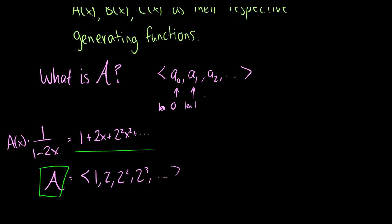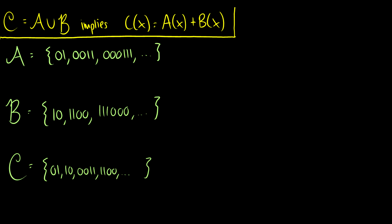So why do we need this notion? Combinatorial families are used to count more complex objects, and they have some very nice properties. Let's say we have a combinatorial family C which is the union of two different families A and B. We can find the generating function for C by adding the generating functions for A and B.